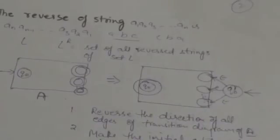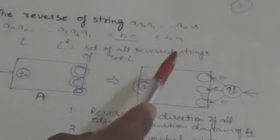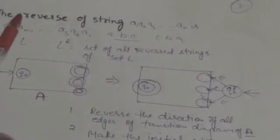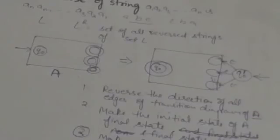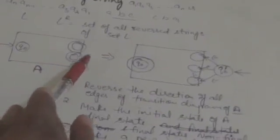Suppose L is a regular language. Then L^R is the set of all reversed strings of set L. If L is a regular language, then L^R will also be a regular language. L^R represents the set of all reversed strings of set L. We have to prove that L^R is also a regular language — meaning there should be some finite automata which will accept the strings of set L^R. Suppose automata A accepts the strings of language L.